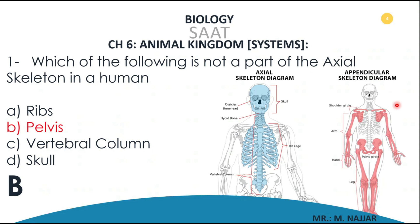The appendicular skeleton includes the bones of the arm, the bones of the leg, the shoulder girdle, and the pelvic girdle. So the question asks which is not part of the axial skeleton. Ribs, vertebral column, and skull are all part of the axial skeleton, but the pelvis is part of the appendicular skeleton, not the axial skeleton.